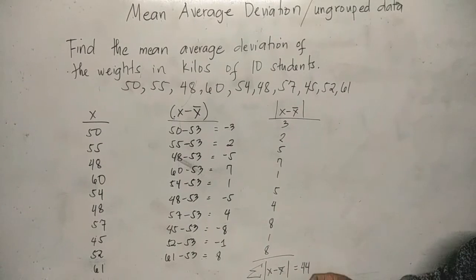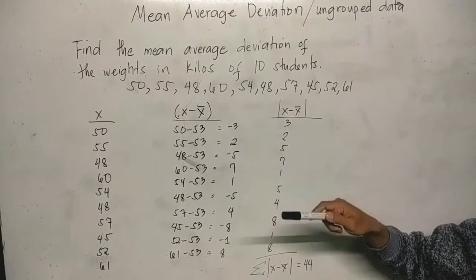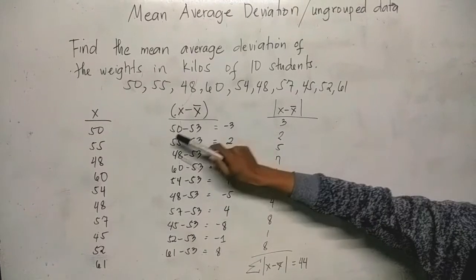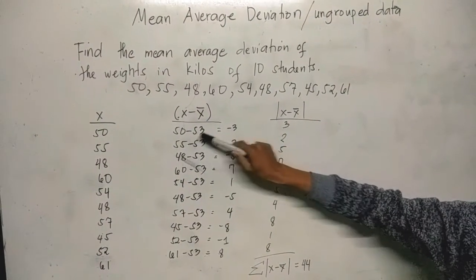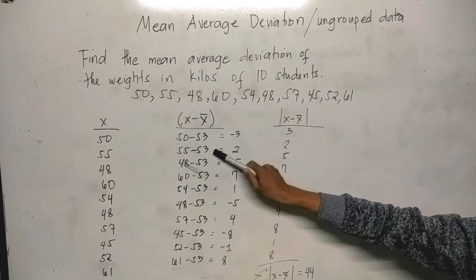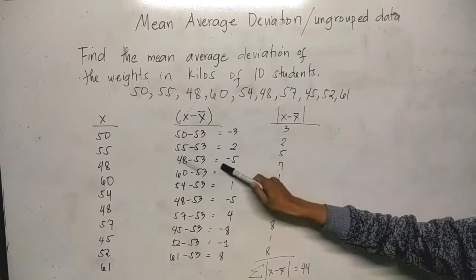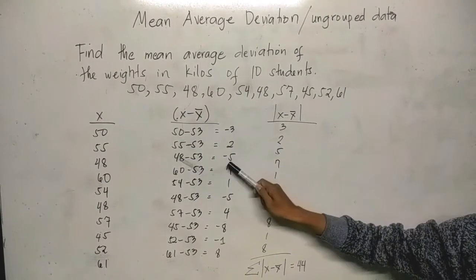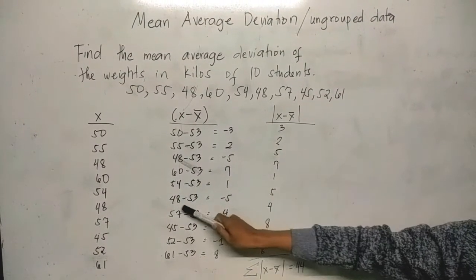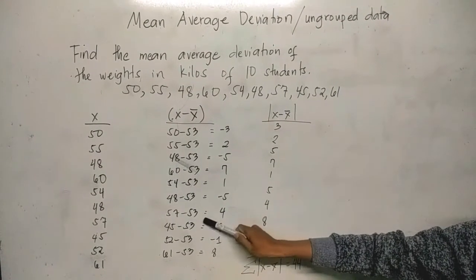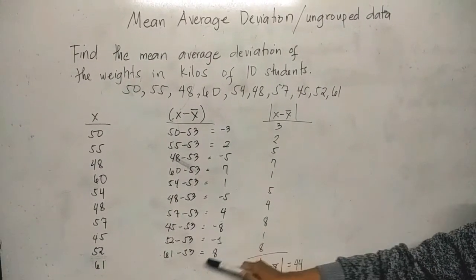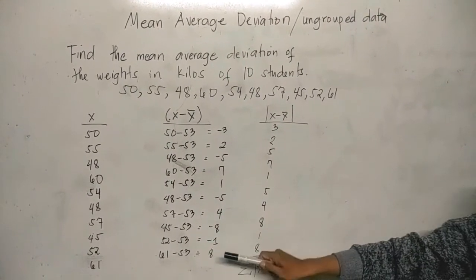Now we are going to subtract or find the difference of the x and the mean or x bar. So 53 is the mean. We subtract each value from the mean: 50 minus 53 equals negative 3, 55 minus 53 is positive 2, 48 minus 53 is negative 5, 60 minus 53 is positive 7, 54 minus 53 equals 1, 48 minus 53 equals negative 5, 57 minus 53 equals 4, 45 minus 53 equals negative 8, 52 minus 53 equals negative 1, and 61 minus 53 equals positive 8.